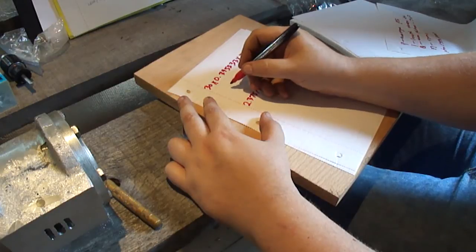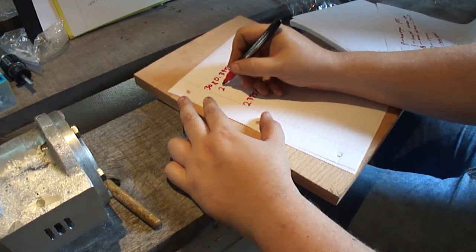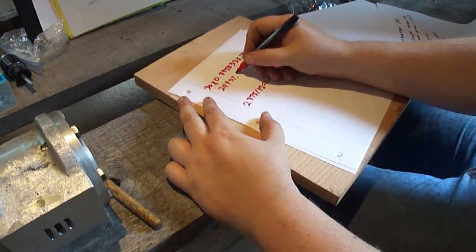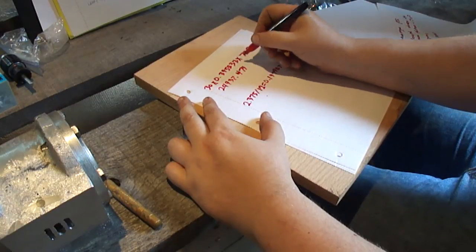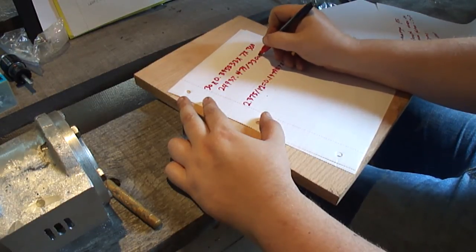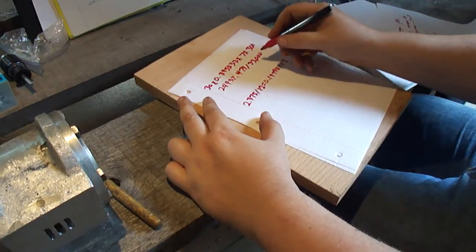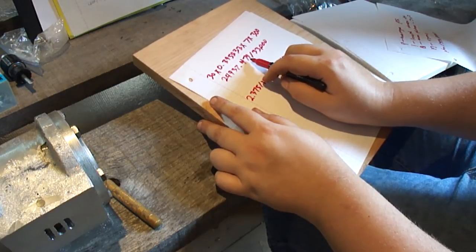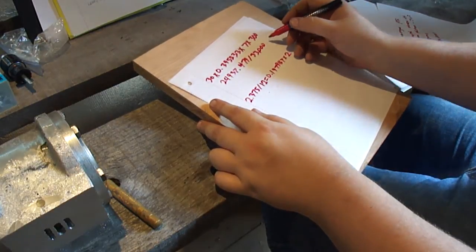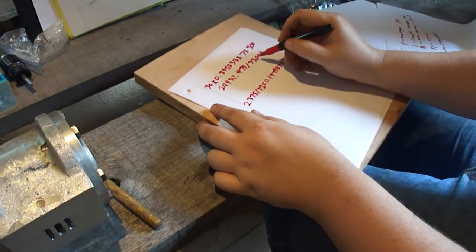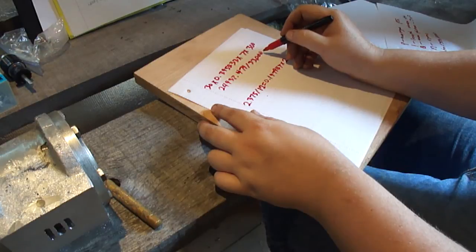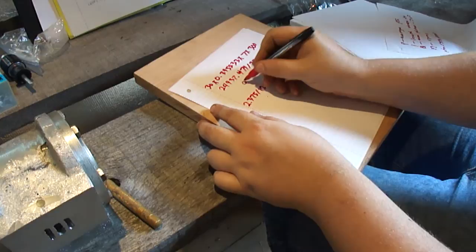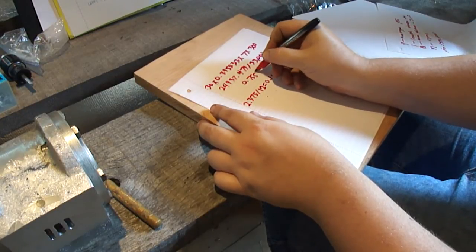That will come out to 24,937.479. And then you divide that by 33,000, which will come out to 0.7557 horsepower.